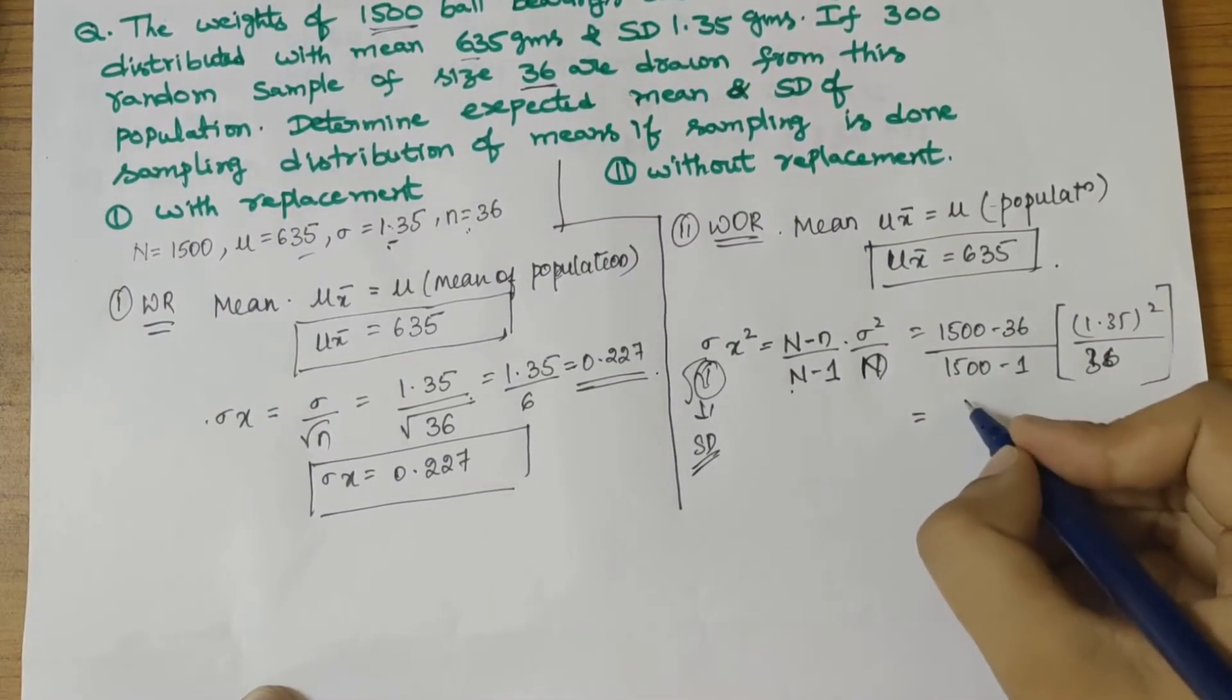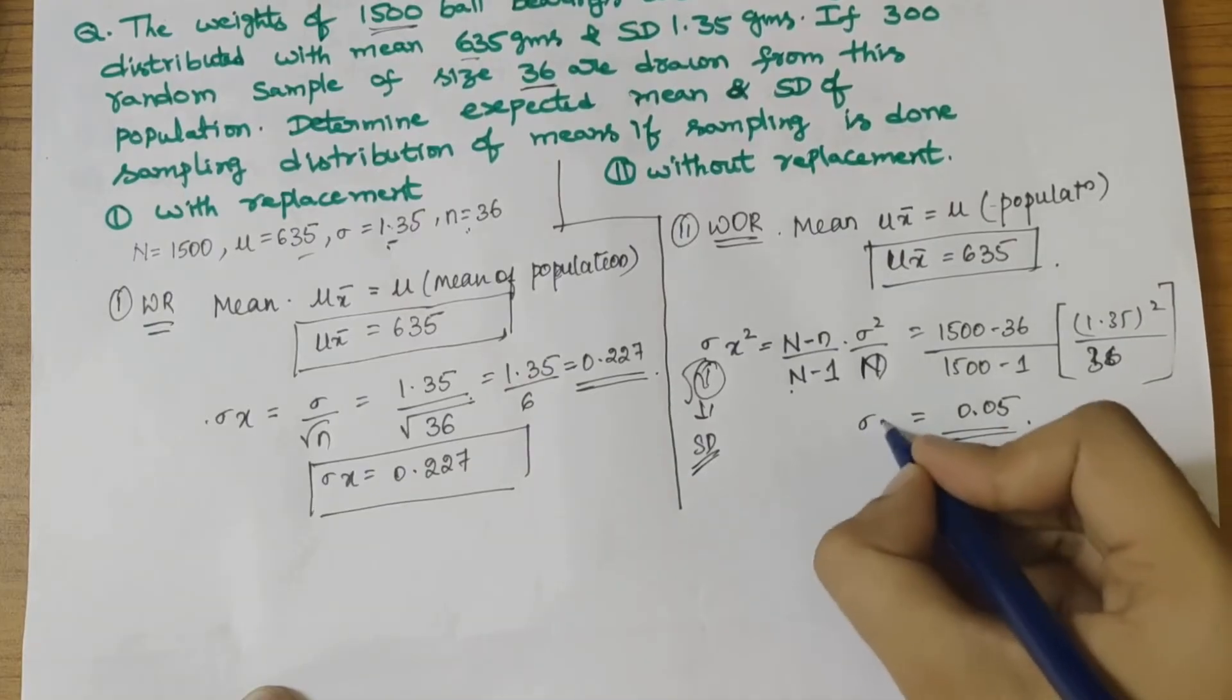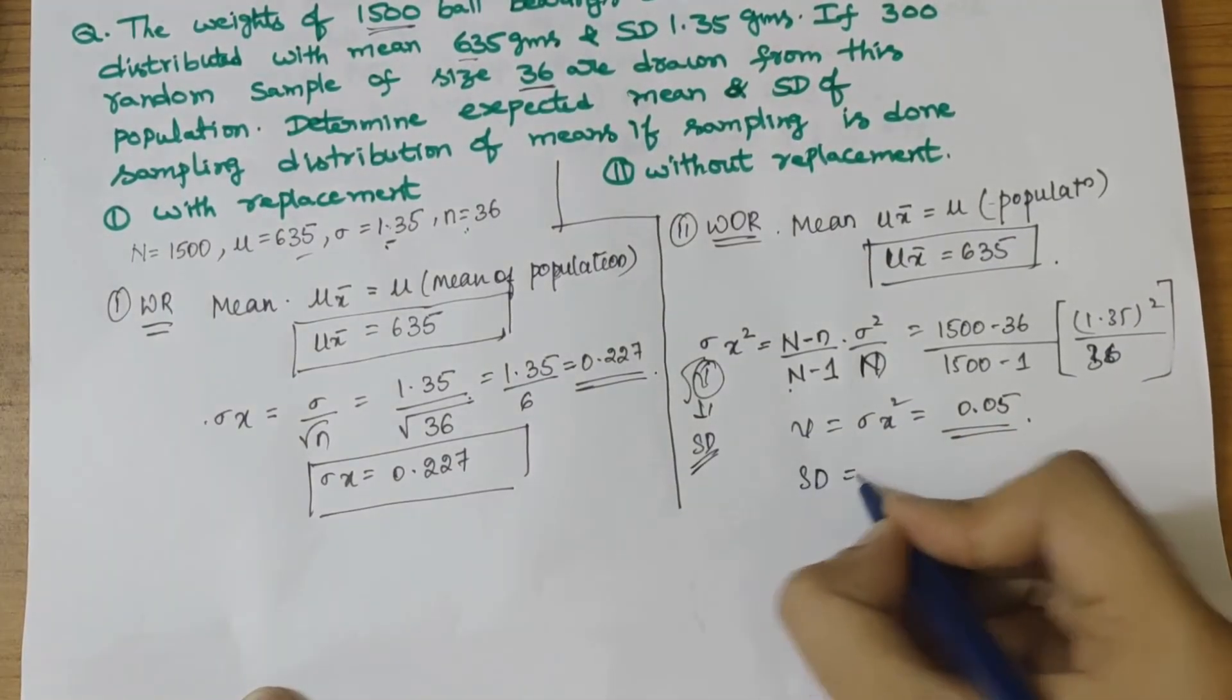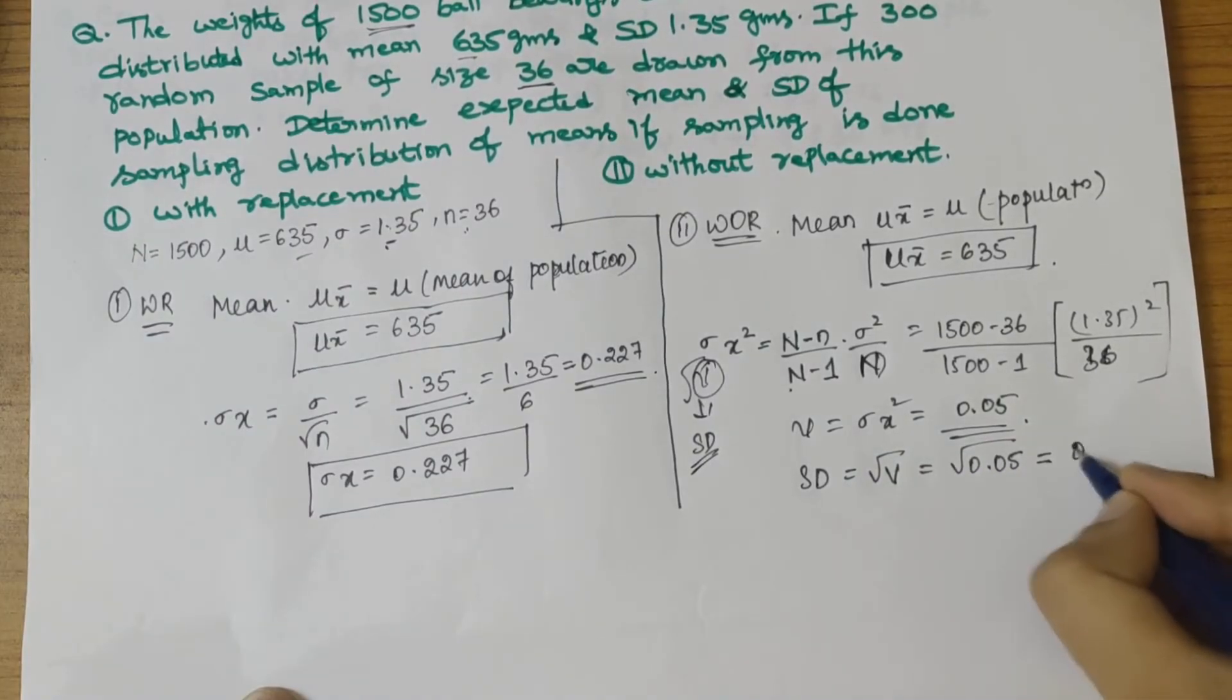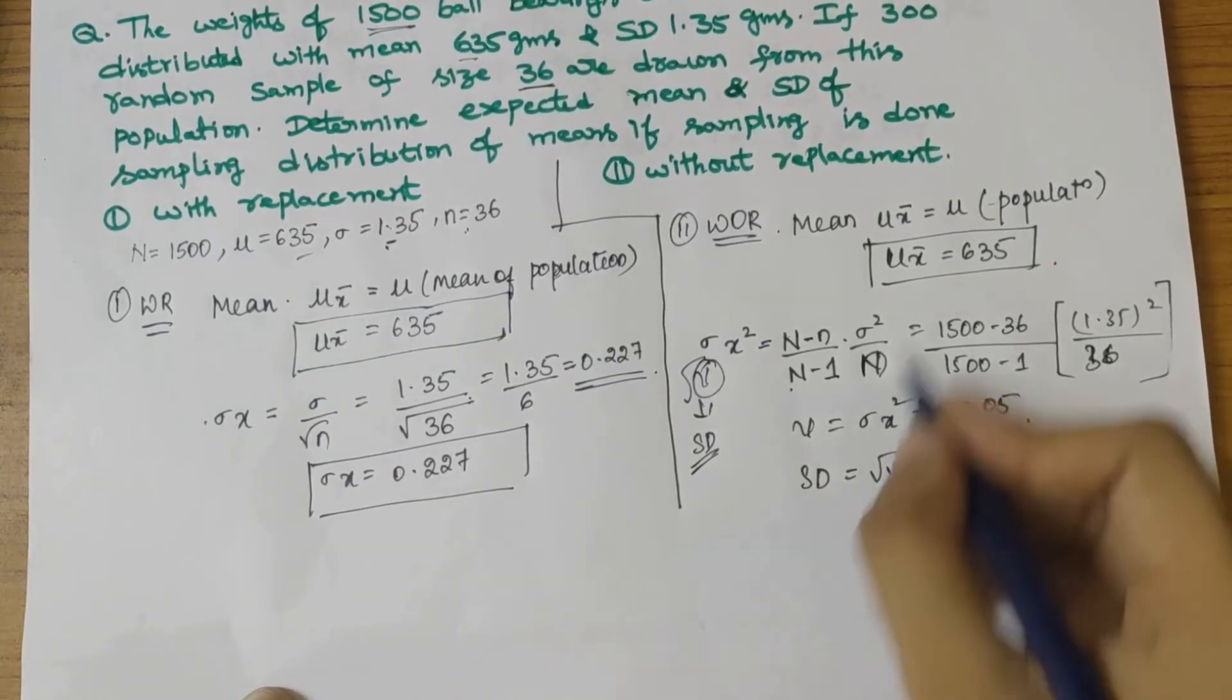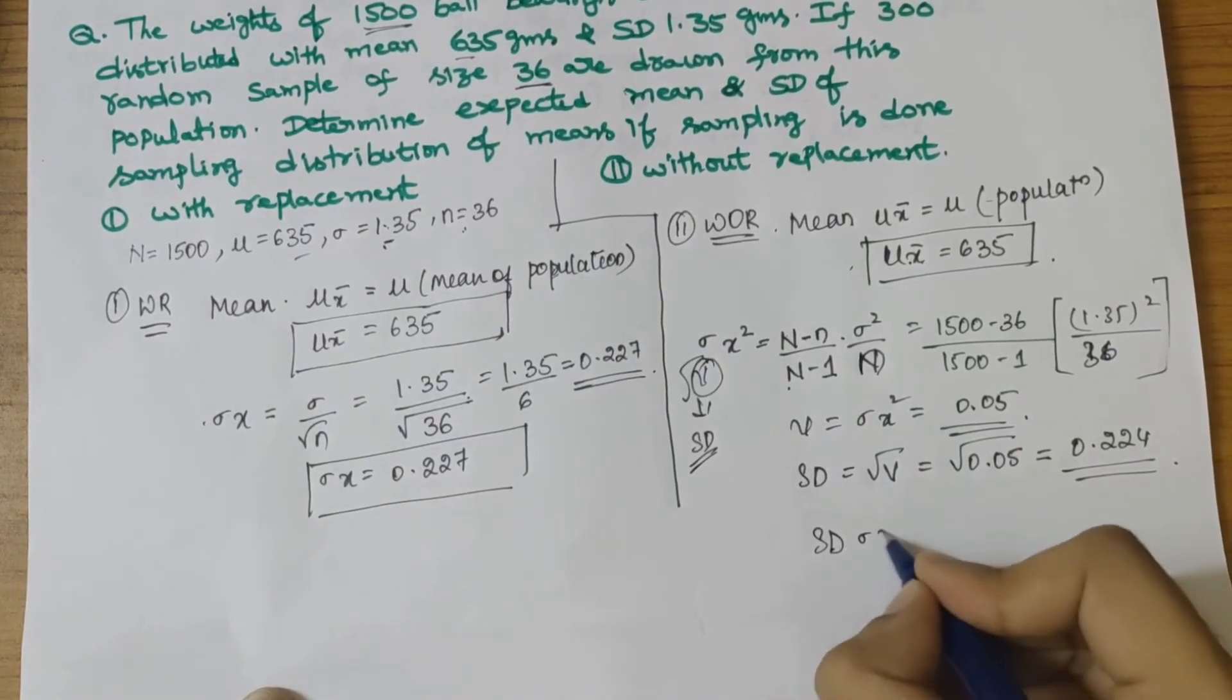Solving this gives 0.05, which is σx̄² (the variance). Finding the standard deviation by taking the square root of 0.05, we get 0.224. We have found the mean and standard deviation of the sample without replacement.